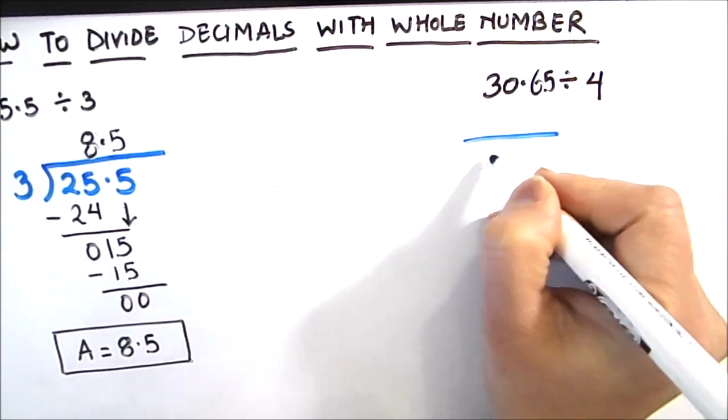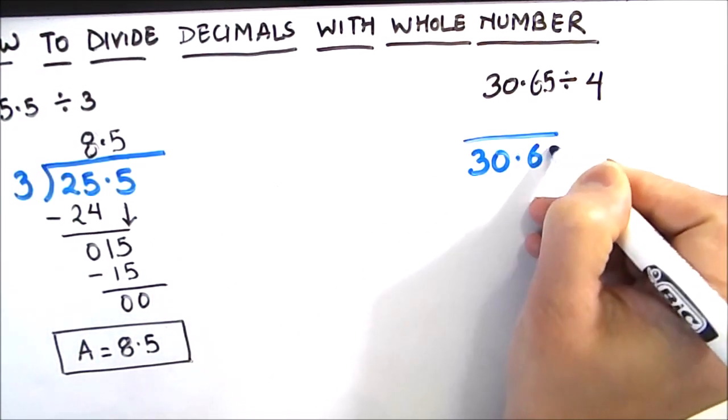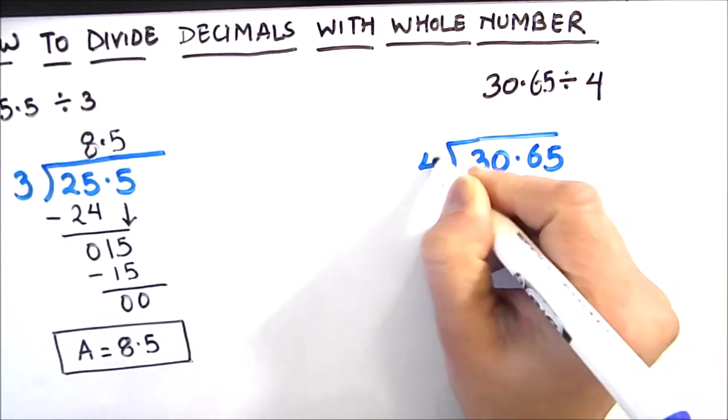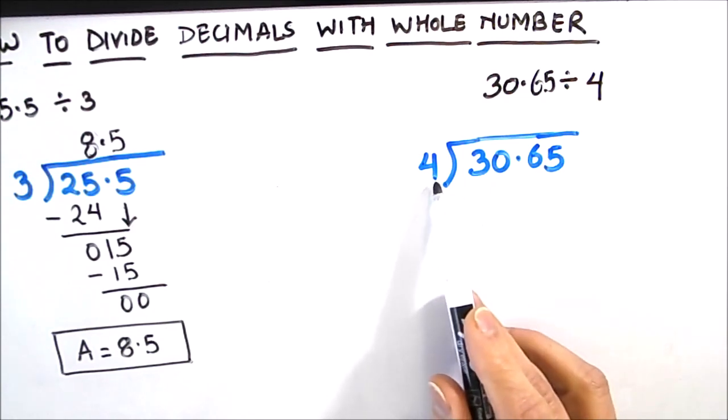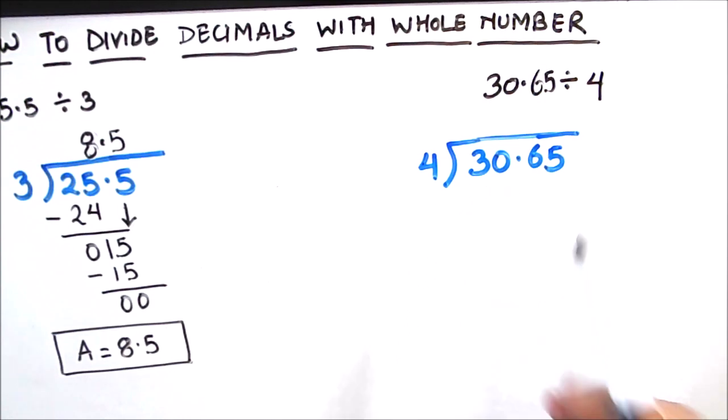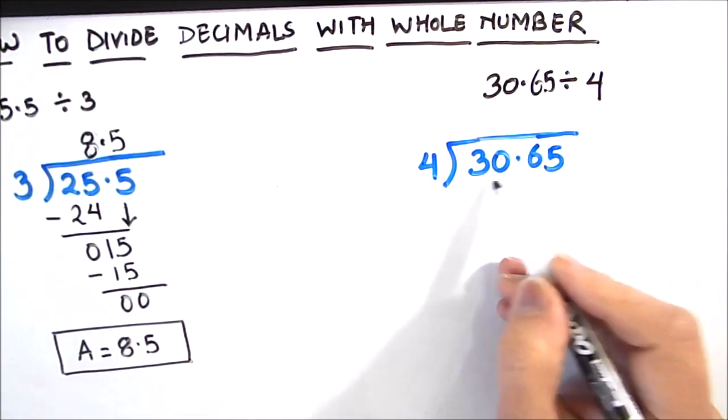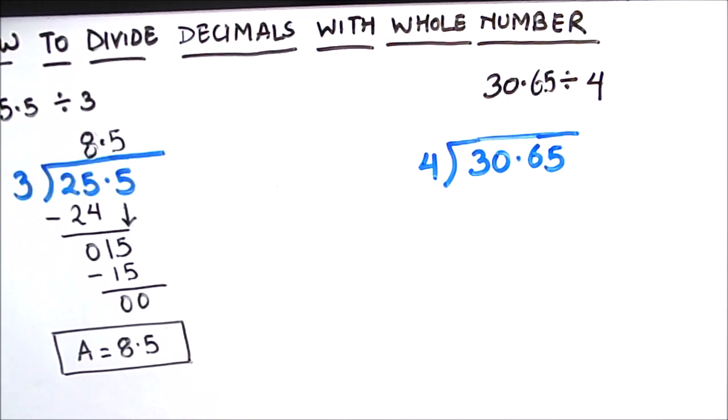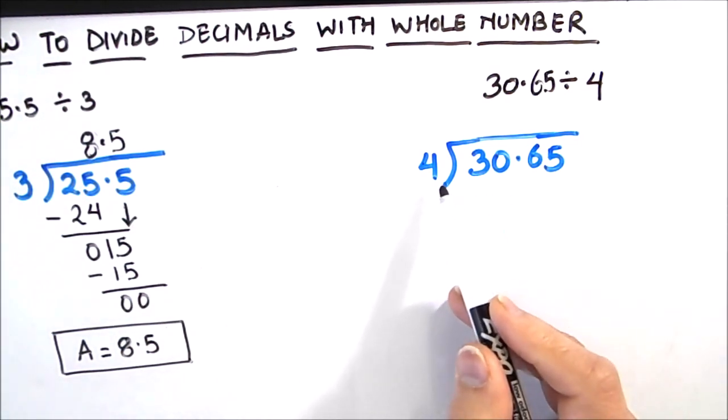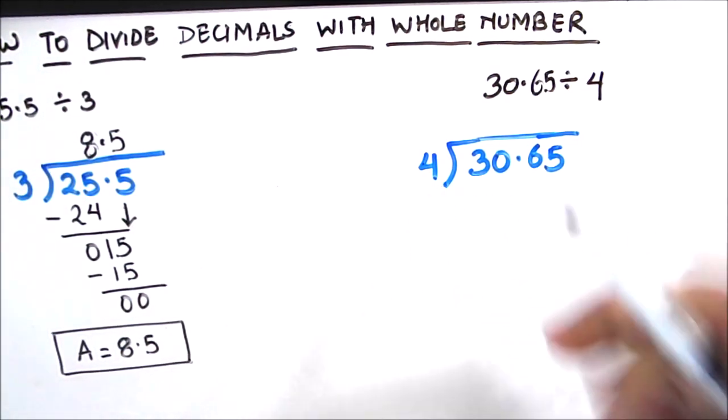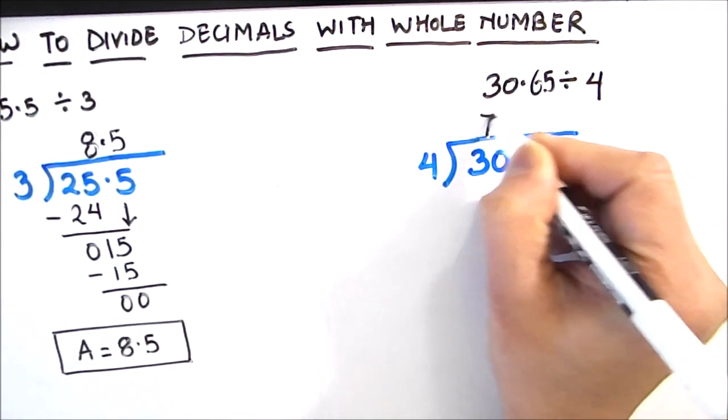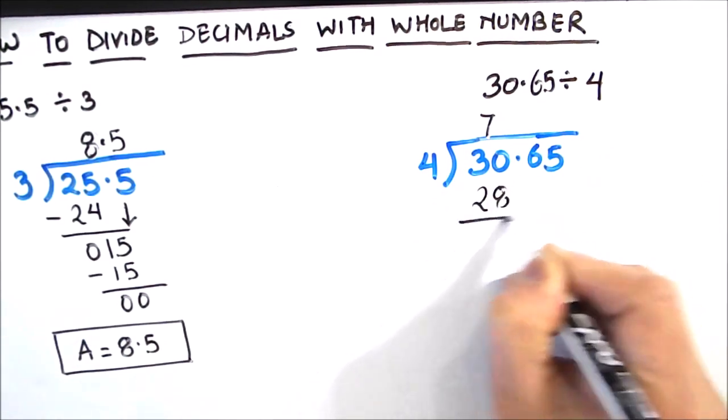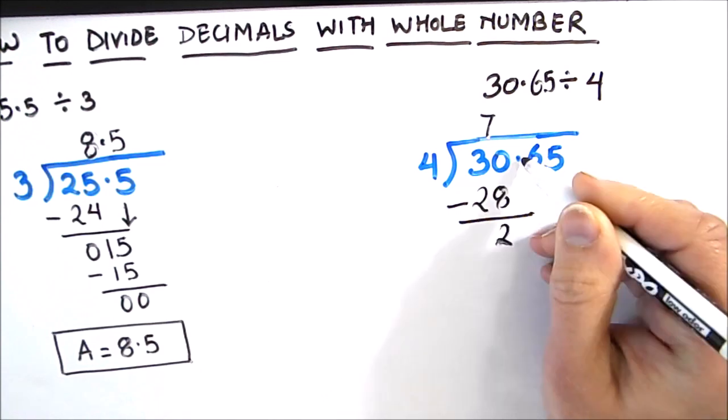We have the number 30.65 divided by 4. Here too we are going to start with the highest place value number which is 3. But here we see that 3 is less than 4, so we are going to take two numbers together. So we are dividing 30 by 4. Now we will count the tables of 4 until we get 30 or just less than 30. So 4 times 7 is 28. We are going to subtract 28 from 30 which gives us 2.